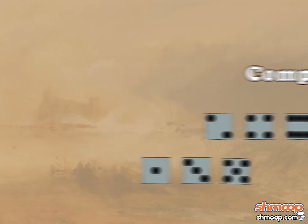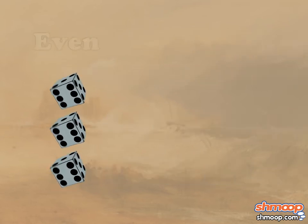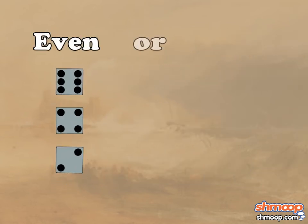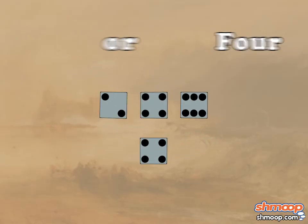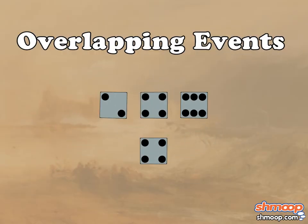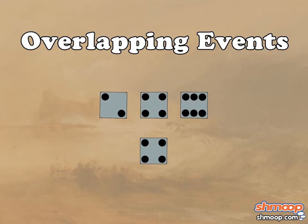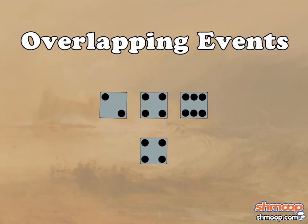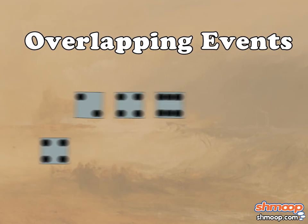And finally, consider rolling a die and getting an even number, or a four. They are neither mutually exclusive nor complementary — they are overlapping events. So if you roll the die and you get an even number, it might be a four. But if you roll a four, it's definitely an even number.